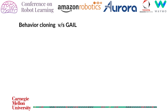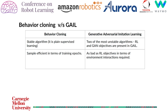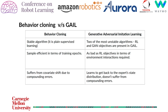Let's talk about behavior cloning versus GAIL. Behavior cloning, being a supervised learning algorithm, is very stable. On the other hand, GAIL combines two of the most unstable algorithms: RL and GAN objectives. Next, behavior cloning is sample efficient in terms of training epochs, and GAIL is at least as bad as the underlying RL algorithm in terms of environment interactions required. However, behavior cloning suffers from covariate shift due to compounding errors. In GAIL, the agent can get back to the expert state distribution when it deviates from it, and hence the compounding error does not happen.